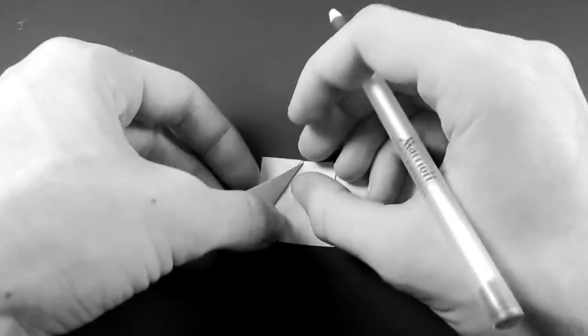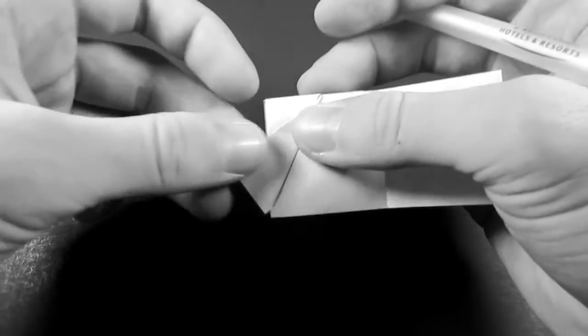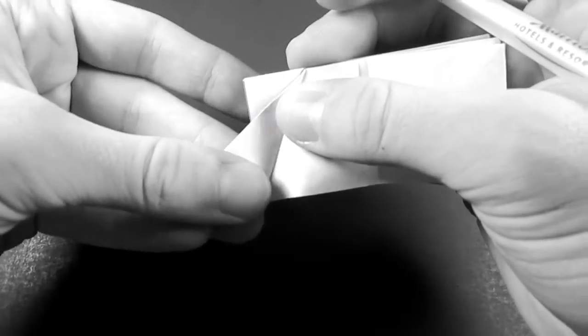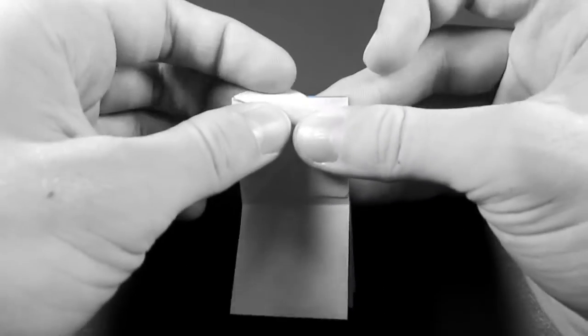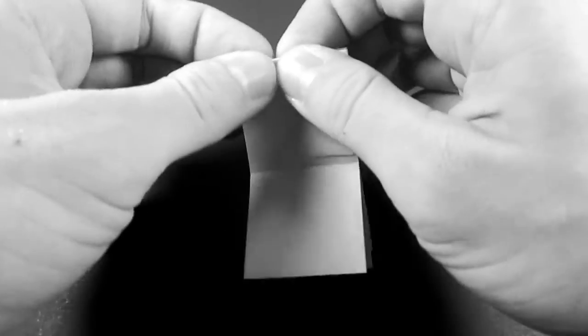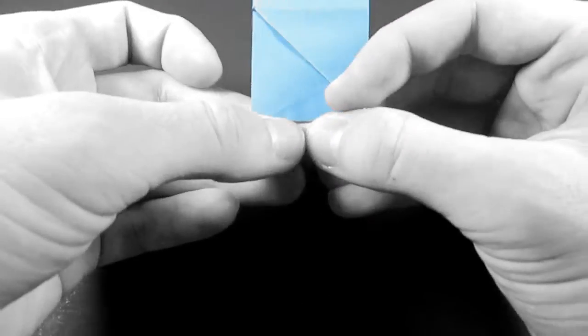So just fold it over as far as it'll go in both directions. And you want to be careful, otherwise your paper's going to tear like that. Not pretty. Okay, and now we'll just get rid of that pen. We'll just fold this flap back. Then we'll unfold it and turn over.